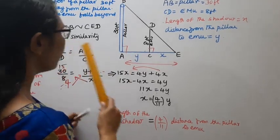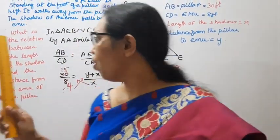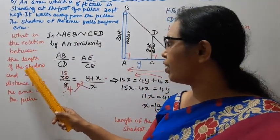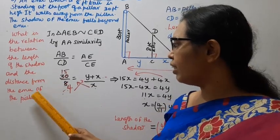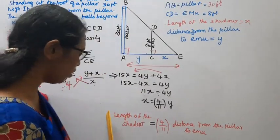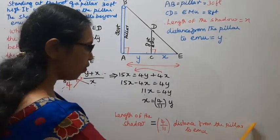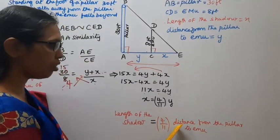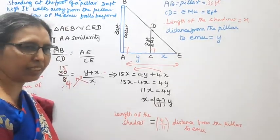What is the question they're asking? What is the relation between the length of the shadow and the distance from the emu of the pillar? Aparam, answer is length of the shadow equal to 4 by 11 into distance from the pillar to emu.